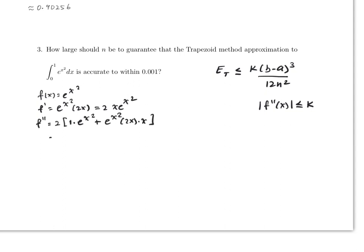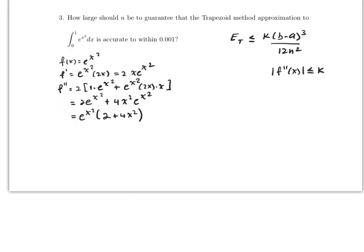Applying the product rule to f'(x) = 2x·eˣ², the second derivative is 2eˣ² + 4x²eˣ², which factors to eˣ²(2 + 4x²). Since x is between 0 and 1, the maximum occurs at x = 1, giving e¹·(2 + 4·1) = 6e. So we set K = 6e.